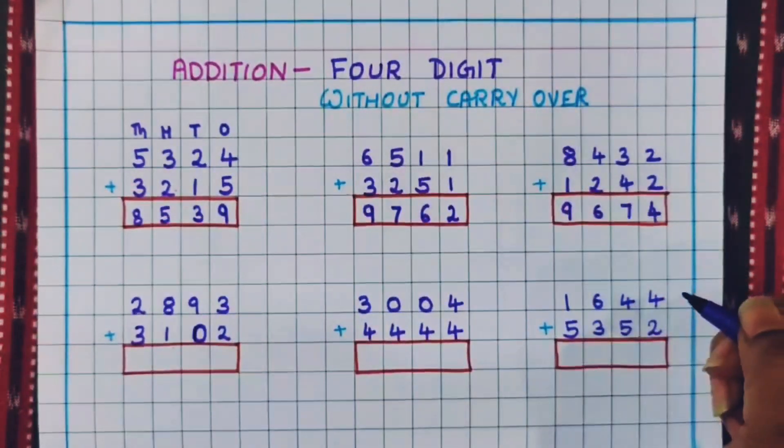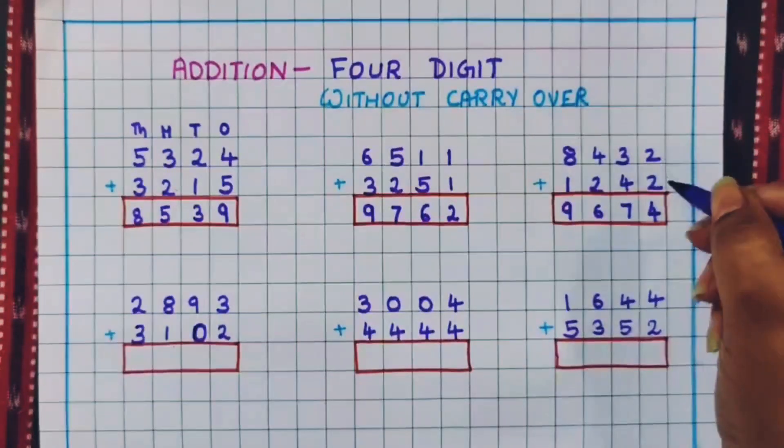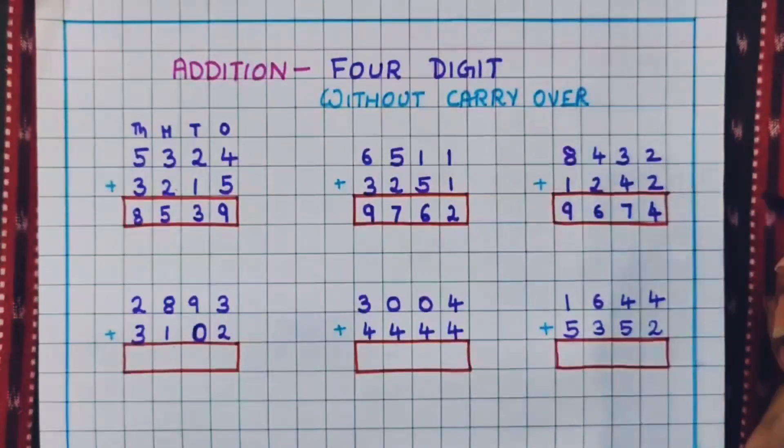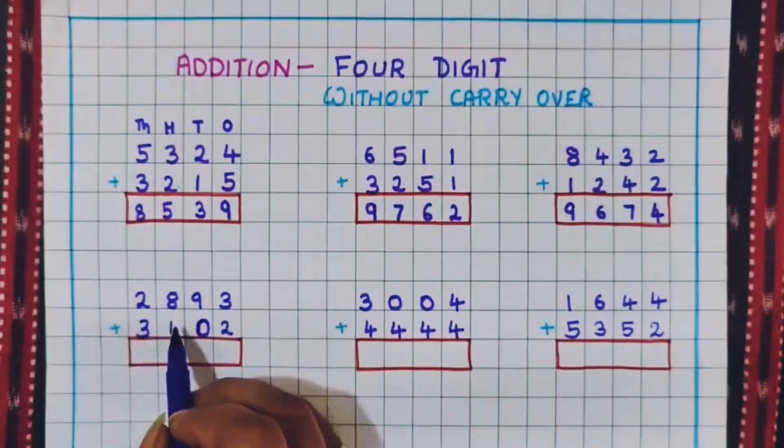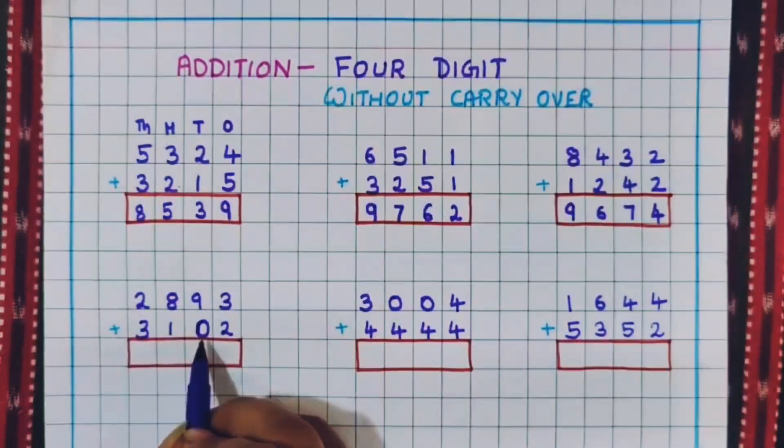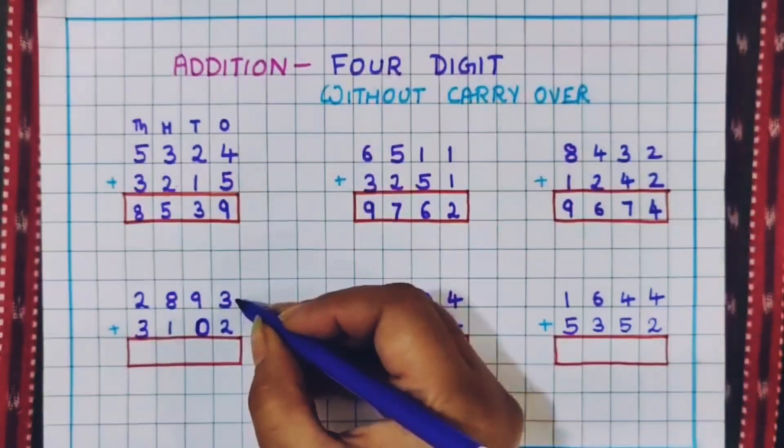I hope the concept is clear to you. Always the addition will start from ones place. The next problem is 2,893 plus 3,102. So let's do it.